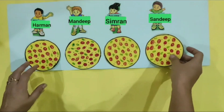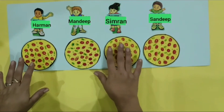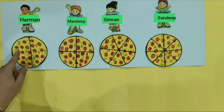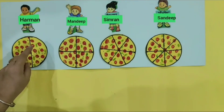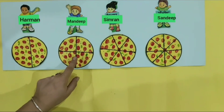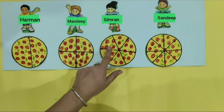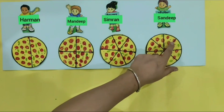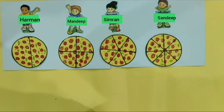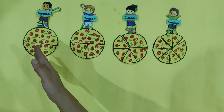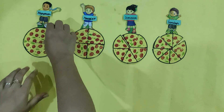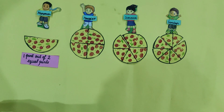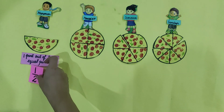Now students, when they were going to eat pizzas, Harman cut his pizza into 2 equal slices. Mandip cut his pizza into 4 equal slices. Simran cut her pizza into 6 equal slices. And Sandeep cut his pizza into 8 equal slices. After cutting the pizza into different slices, Harman ate 1 part out of 2 equal parts, and we write it as 1 by 2.